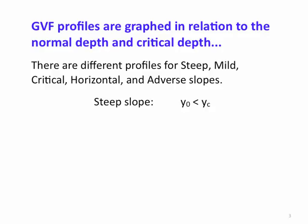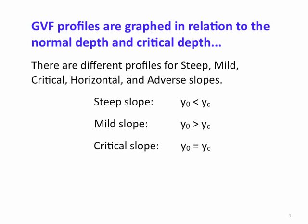A steep slope is one where the normal depth is less than the critical depth — the flow wants to be shallow and fast. A mild slope is one where the normal depth is deeper than the critical depth — the flow wants to be deep and slow. A critical slope is where these two depths are exactly equal; the flow wants to be at a Froude number of 1, where the flow velocity equals the wave velocity.